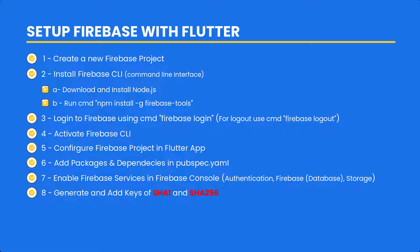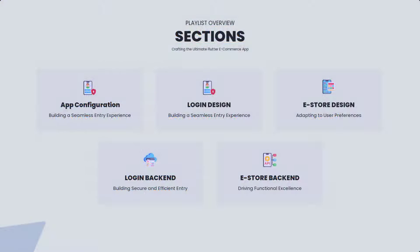Once the Firebase tools are enabled, we will activate our Firebase CLI. Once activated, we will log in using Firebase on the same account where we created the Firebase project. Once logged in, we can access that specific project. Then we will fetch all the projects using the FlutterFire configure command, add dependencies, and add SHA1 and SHA256, which will be used for authentication in upcoming videos.